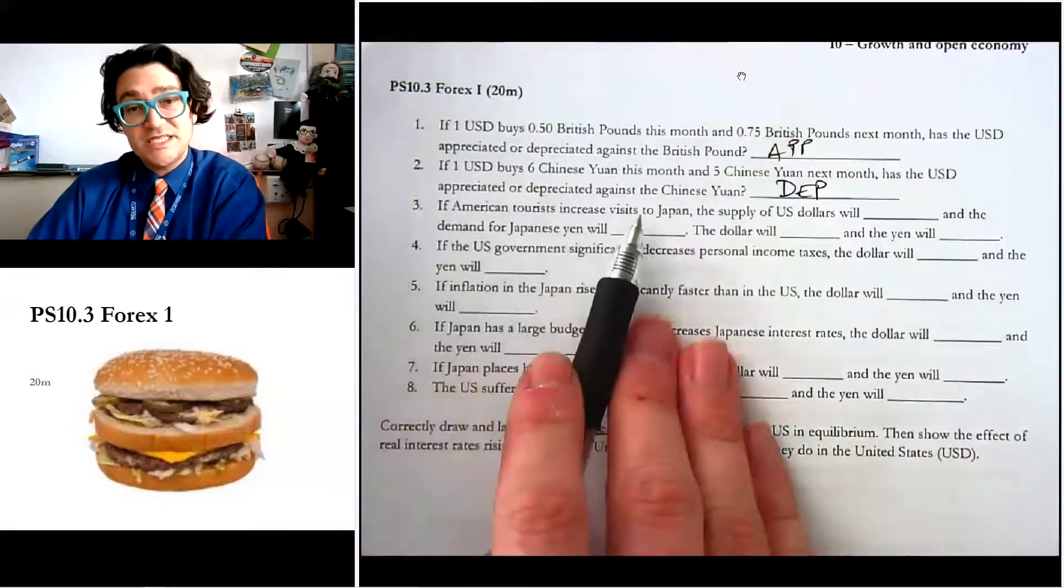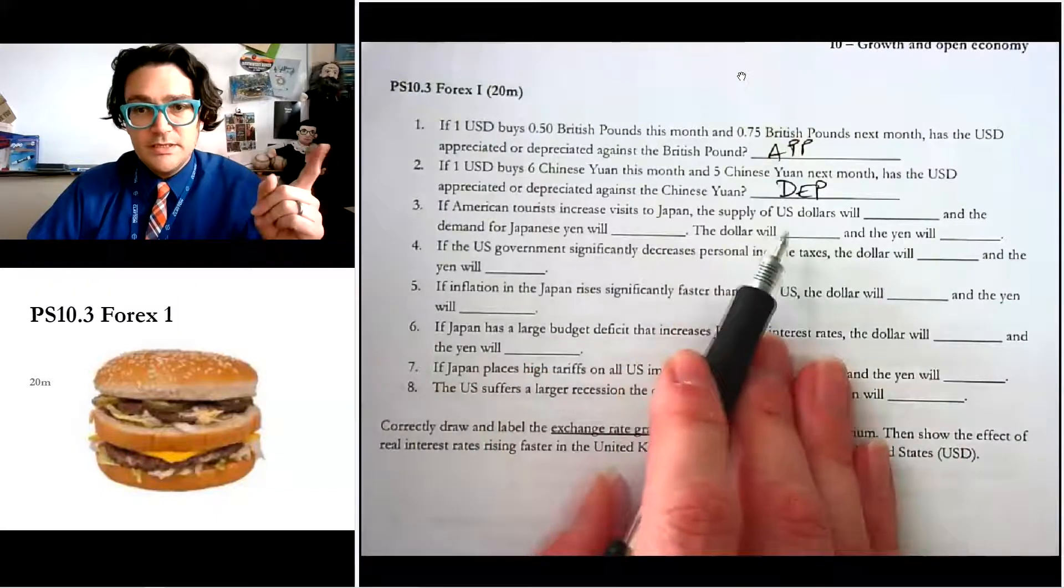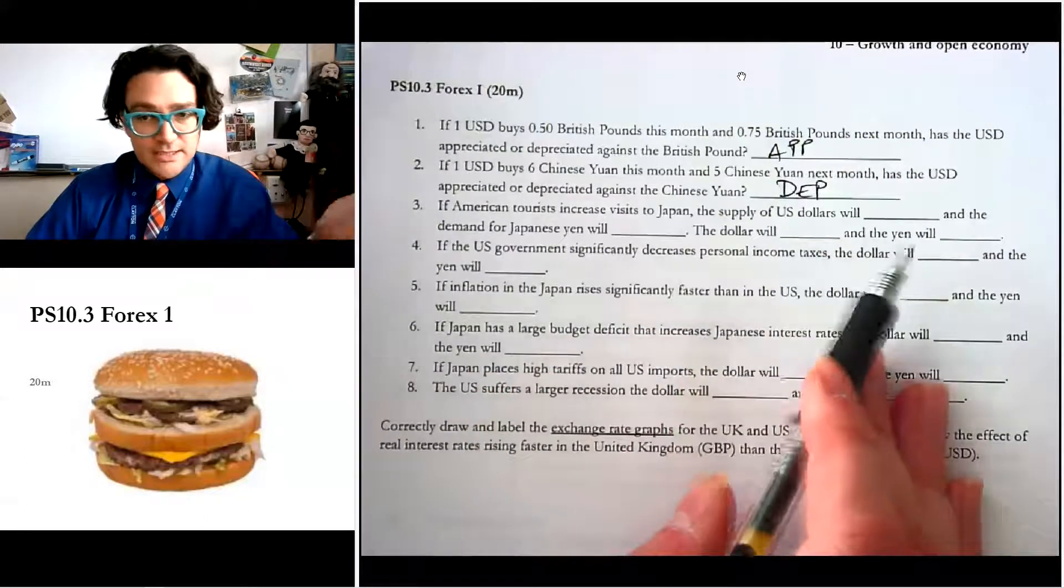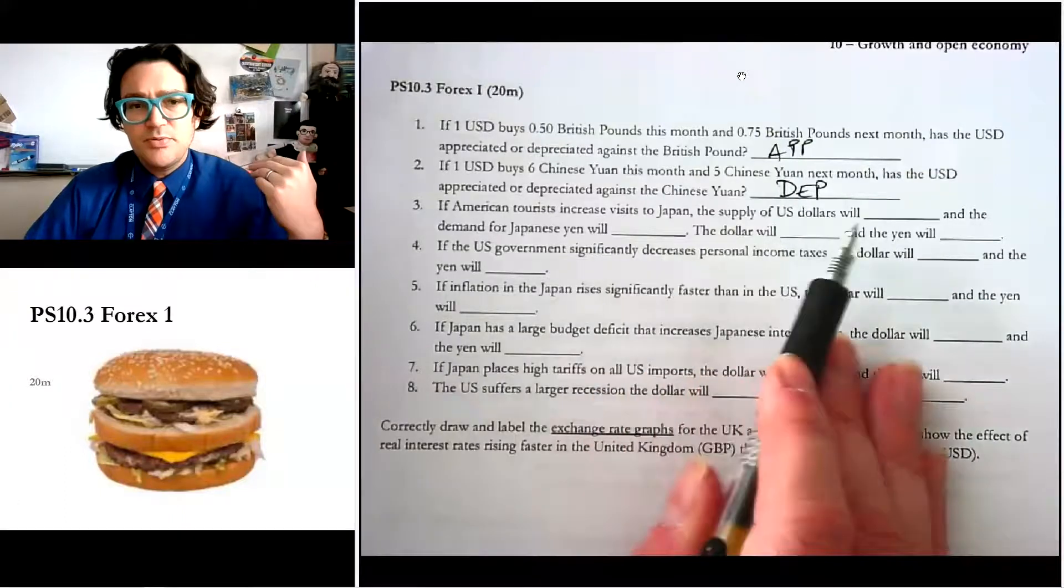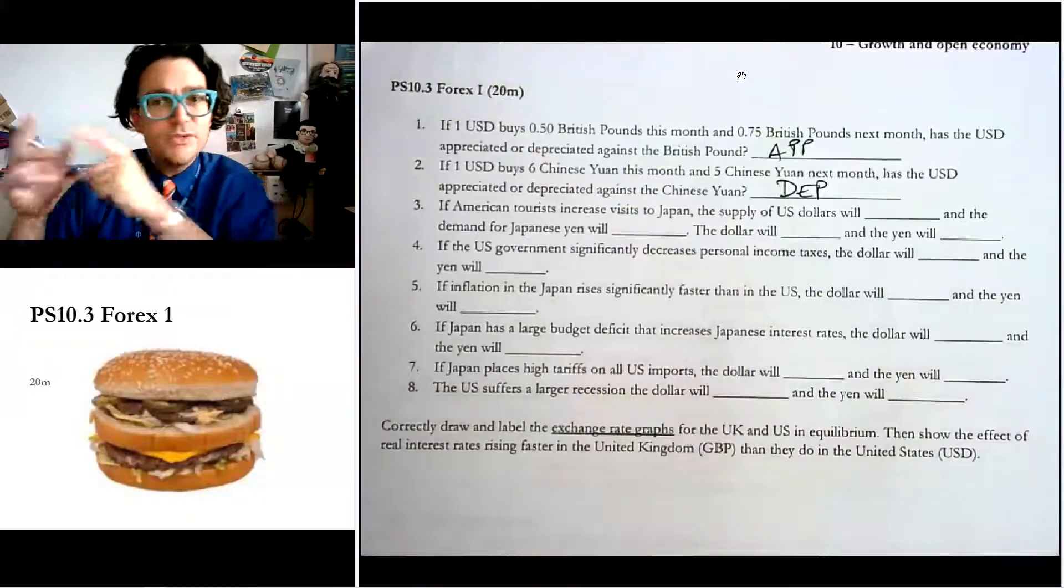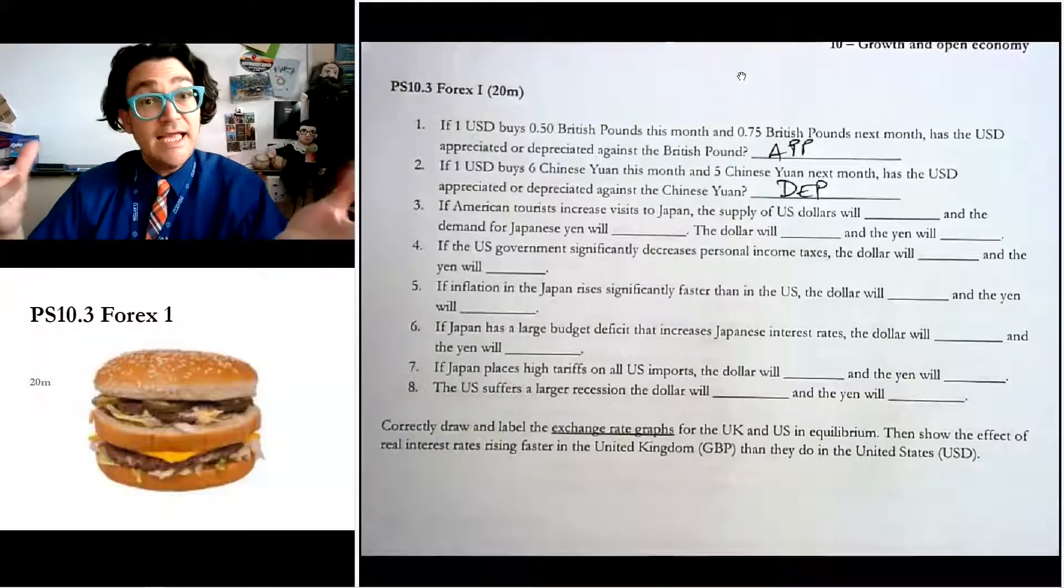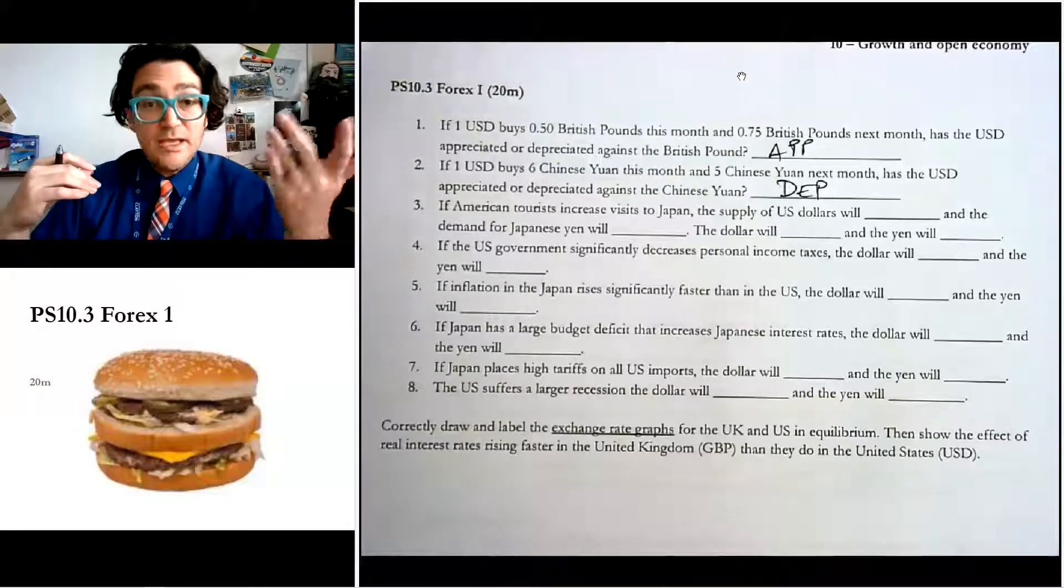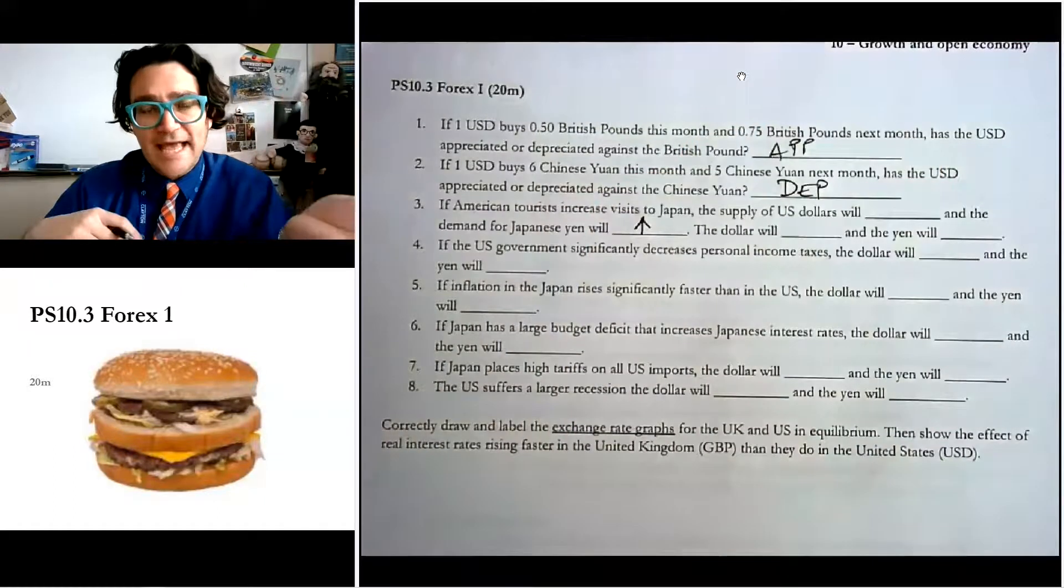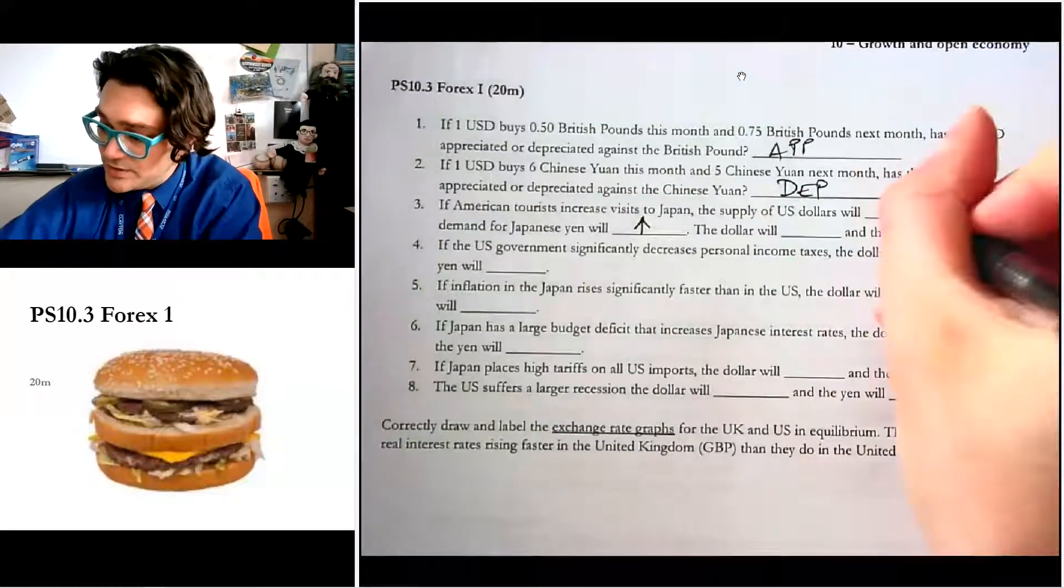If American tourists increase visits to Japan, now here's where things are going to get tricky. The supply of dollars will blank. The demand for yen will blank. The dollar will appreciate, the yen will what? So if the American tourists are going to Japan, what are those tourists going to need? Well, they're going to need yen. So they're going to demand more yen. And in order to get those yen, they're going to have to supply more dollars. So the supply of dollars will increase.